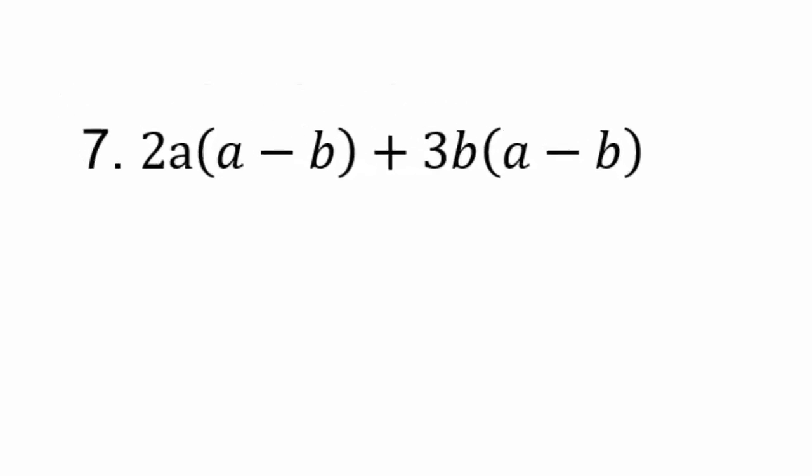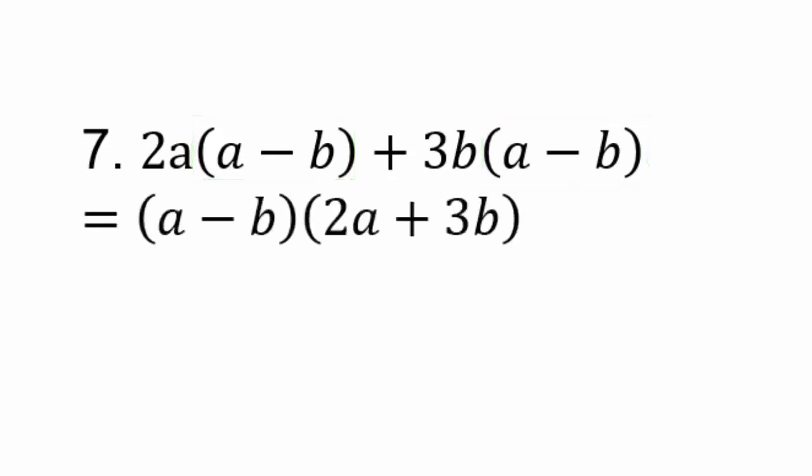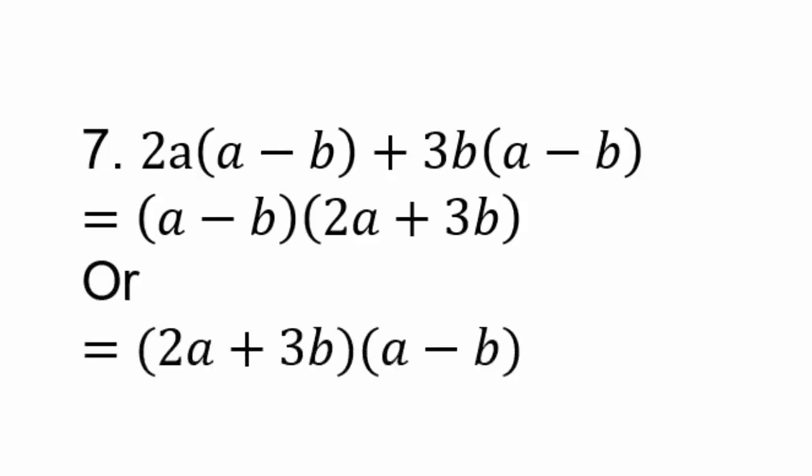The greatest common factor in this case is a minus b. So you will have a minus b times 2a plus 3b. You can also remember how we added like units: you have 2a copies of a minus b plus 3b copies of a minus b, so you end up with 2a plus 3b copies of a minus b — the same equivalent answer.